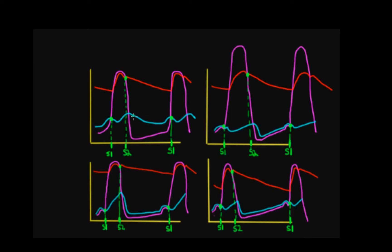Looking at the upper left panel, the abnormality is a very high atrial pressure with a gradient between atrial pressure and ventricular pressure. That gradient starts at the opening of the AV valve and continues until it closes — normally this pressure difference should be very small. On the upper right, there's a pressure gradient between the ventricle and the great artery during the ejection phase, between when the semilunar valve opens and when it closes.